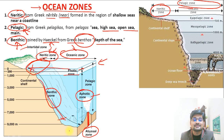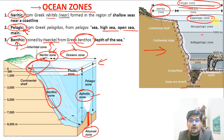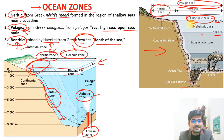There are certain more zonations within the pelagic zone. The upper part, up to 100 meters, is called epipelagic — epi meaning upper surface, like in epidermis. Then between 100 to 1000 meters is called mesopelagic — meso meaning in between.